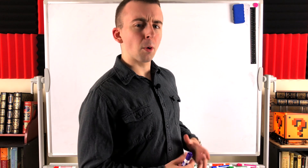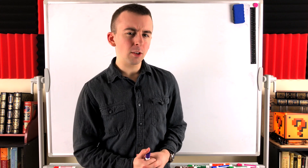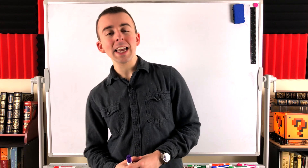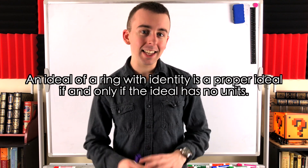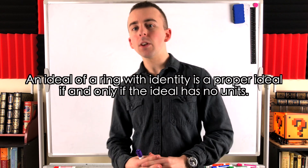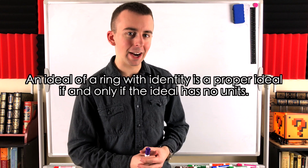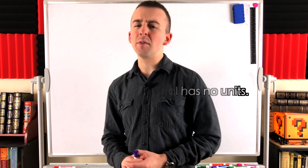Hey folks, good to be back in front of the whiteboard. Haven't done one of these whiteboard lessons in a while. In today's Wrath of Math lesson, we'll be proving that an ideal of a ring with an identity is a proper ideal if and only if it contains no units from the ring.